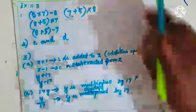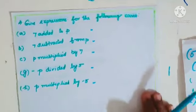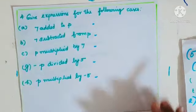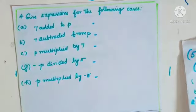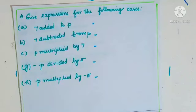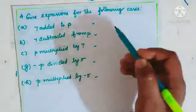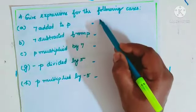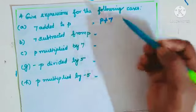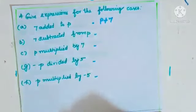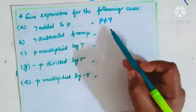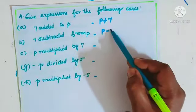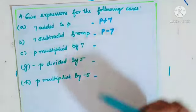The fourth question: give an expression for the following cases. '7 added to p' — expression is p + 7. '7 subtracted from p' — p minus 7. 'p multiplied by 7' — 7p.